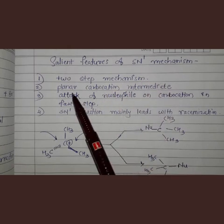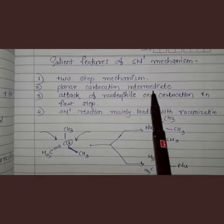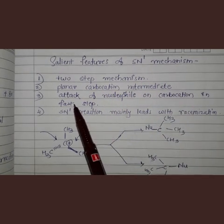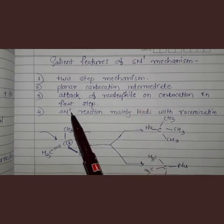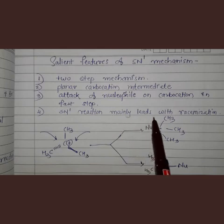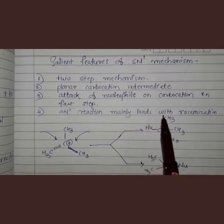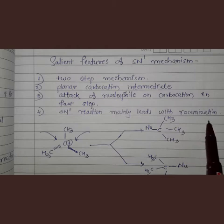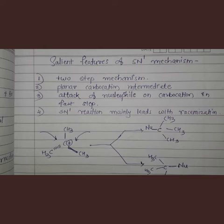So these are the four characteristics of SN1 mechanism: it is a two-step mechanism; a planar carbocation intermediate is formed; nucleophile attack takes place in the second step; and SN1 reaction mainly leads to racemization when a chiral carbon is present in the substrate. We have now completed the SN1 reaction mechanism.